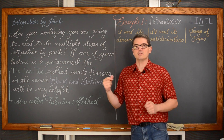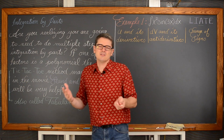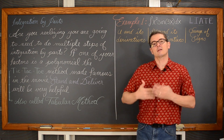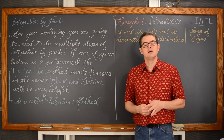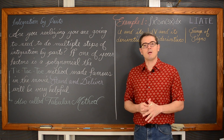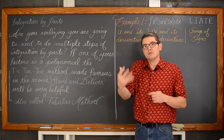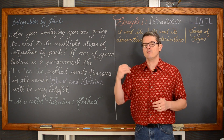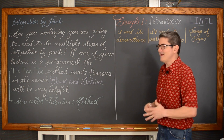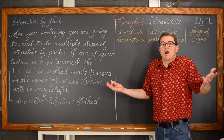You identify u, you identify dv, and you're done in a couple of lines. There are some that take a few lines, or maybe you have to take a couple of steps of integration by parts to complete the problem. But then some of them you have to go with integration by parts three, four, five times and that can be just one problem.